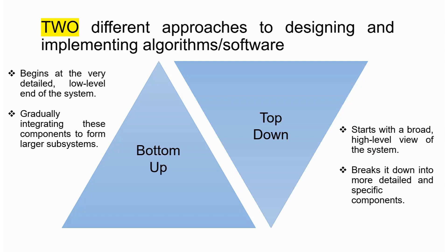If you look into the top-down approach, it's an approach that starts with a broad, high-level view of the system — that's why we have a reverse triangle here. We start with a high-level view of the system and then slowly break it down into more detailed and specific components. Just imagine that if we are building a house, we first start by looking into the layout or the overall structure of the house itself.